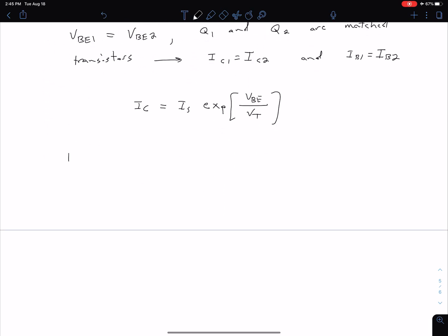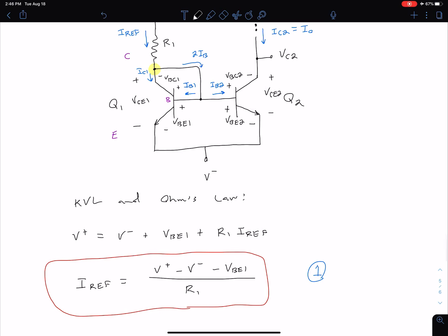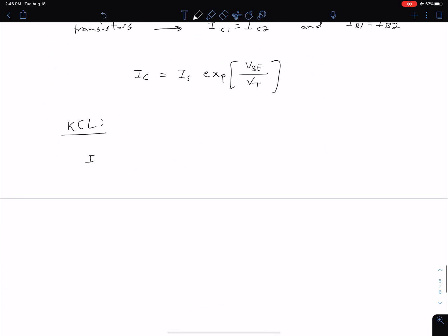We can do a KCL at our Q1 collector, right here. From KCL, we see we have IRef coming in, we have IC1 coming out, and we have IB1 plus IB2 coming out. I've kind of combined two steps into one by saying 2IB is IB1 plus IB2. So we have IRef, which is coming in the top, equals IC1 coming out the bottom, plus IB1 plus IB2.